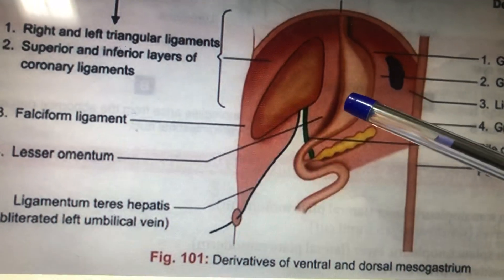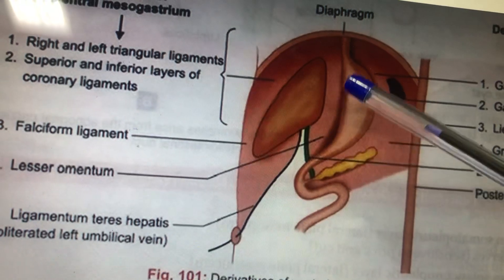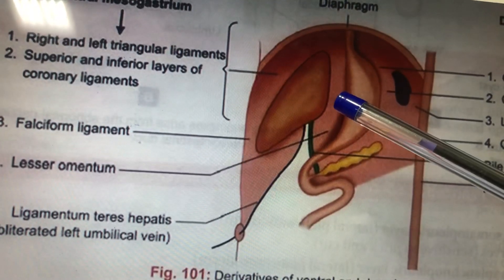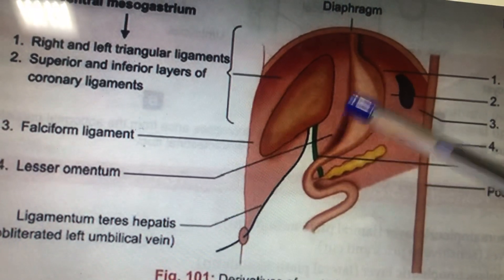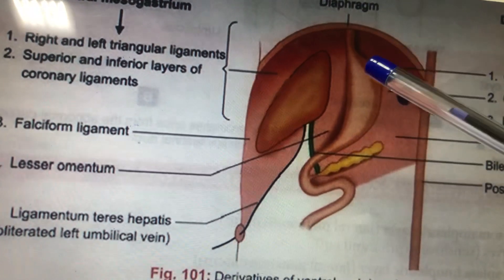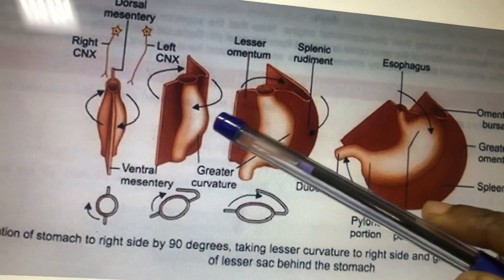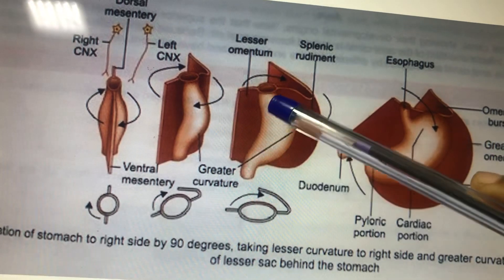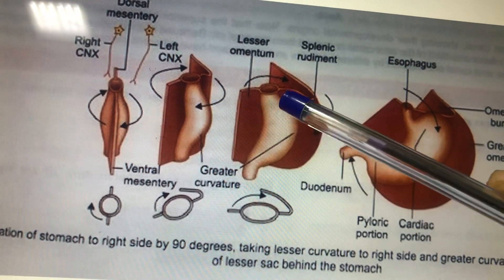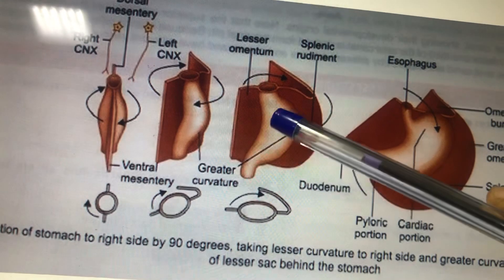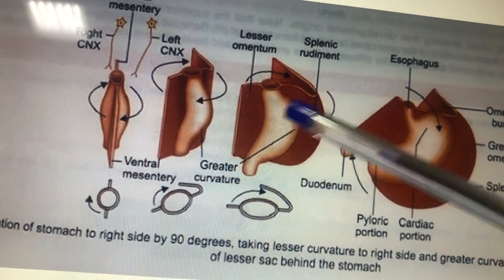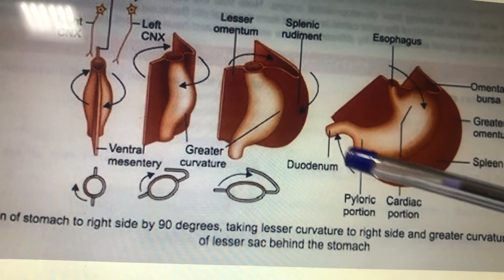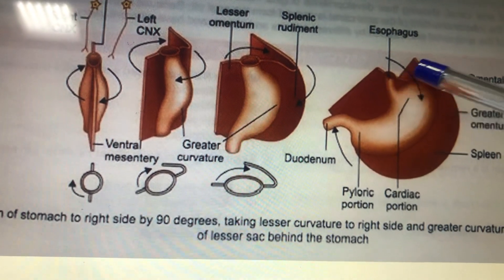The stomach undergoes 90-degree clockwise rotation. The right ventral portion turns towards the right and the dorsal portion turns towards the left. The ventral border becomes the lesser curvature and the dorsal border becomes the greater curvature. The greater curvature then starts expanding.